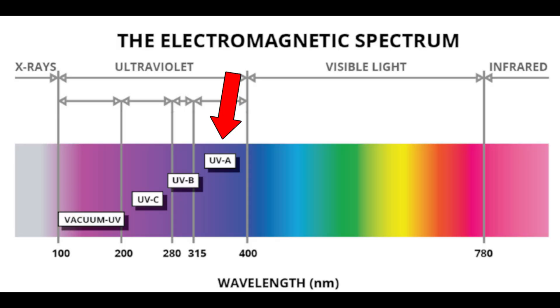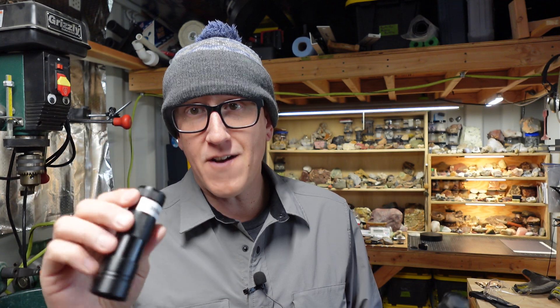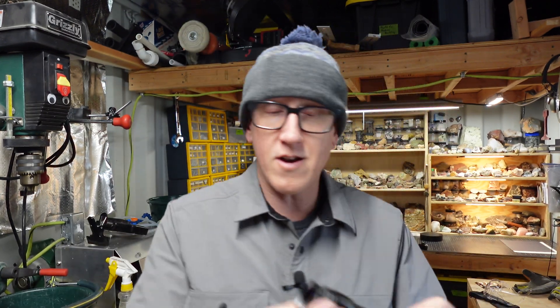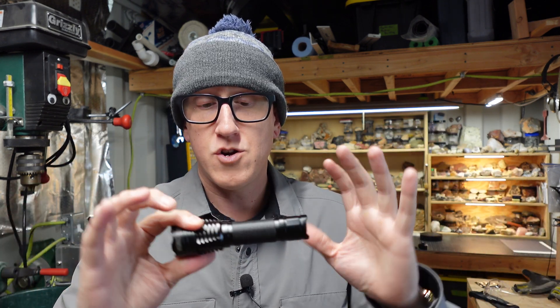Now with UV lights, we have long wave, mid wave, and short wave. These cheap 395 nanometer lights are very close to the visible spectrum and really produce a lot of purple light. We are not really talking about those today. Really we're not talking about long wave either, since we've discussed that and you can go watch that video. Rather, we are talking about 255 nanometer shortwave lights.